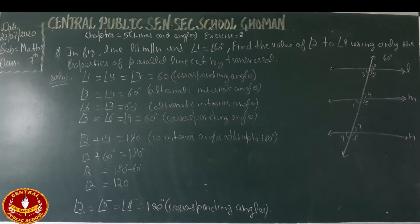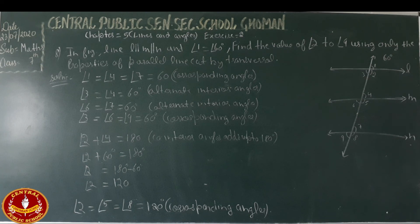All angles have been found using corresponding angles and co-interior angle properties. Exercise 5.2 and Chapter 5 are now complete. Thank you.